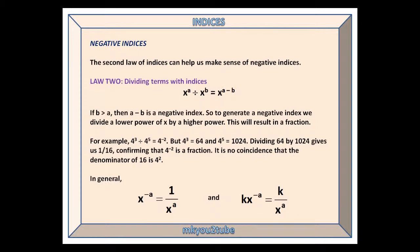Negative indices. The second law of indices can help us make sense of negative indices. If b is greater than a, then a - b is a negative index. So to generate a negative index, we divide a lower power of x by a higher power. This will result in a fraction.